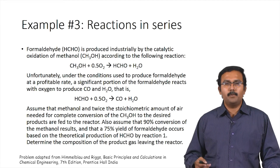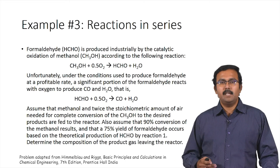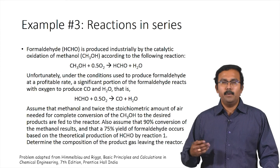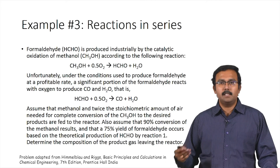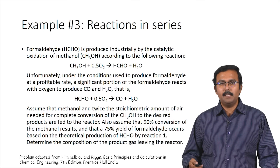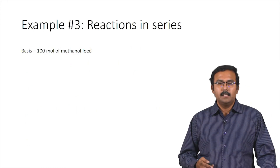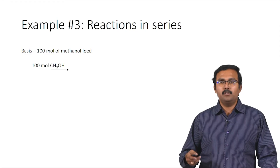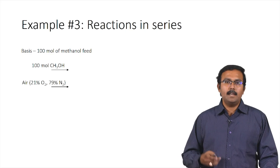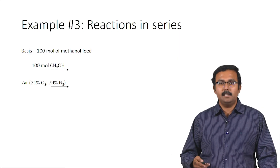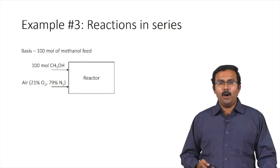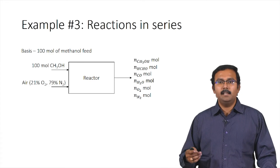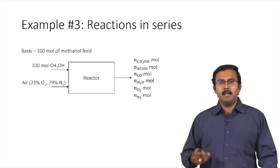We are asked to determine the composition of the product gas leaving the reactor. Since the product gas stream is leaving in the gas phase, we will assume the basis in terms of moles so we can get the final values in moles and perform calculations more simply. We will assume the basis to be 100 moles of methanol fed. Based on this, 100 moles of methanol enter the reactor along with air containing 21% oxygen and 79% nitrogen. The products leaving include unreacted methanol, formaldehyde, carbon monoxide, water, oxygen, and nitrogen.